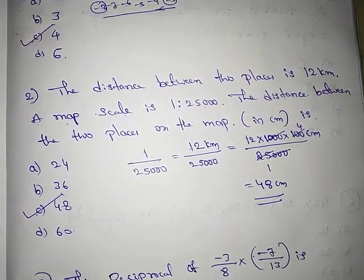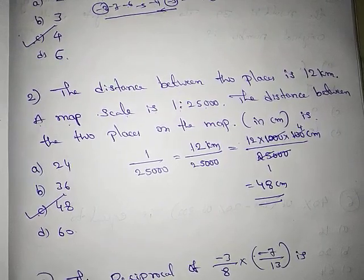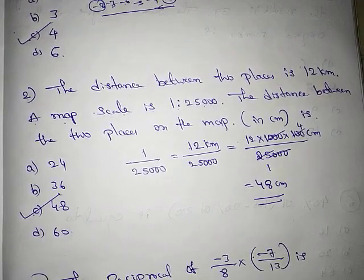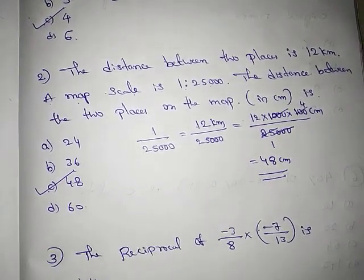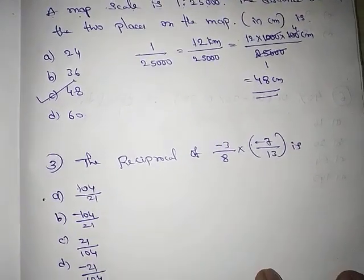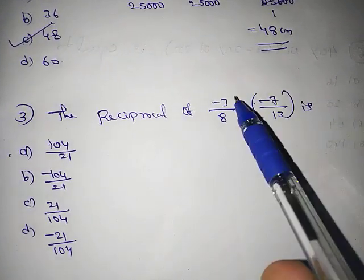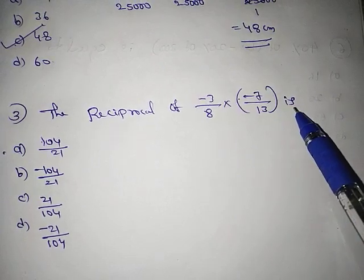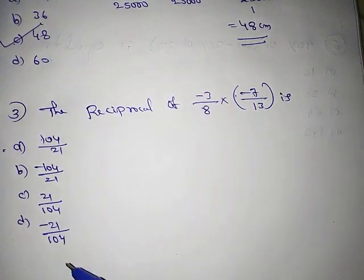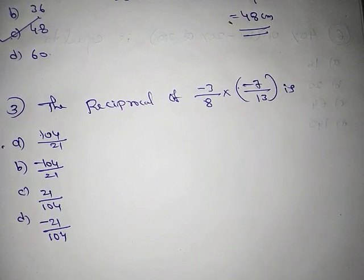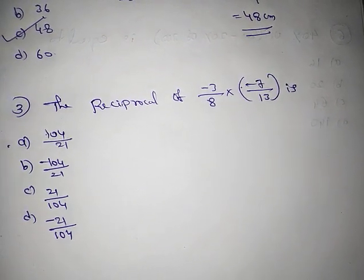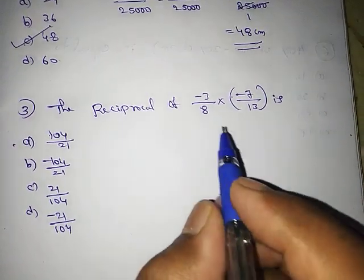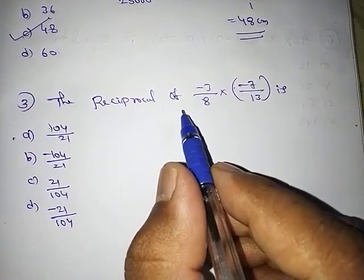I hope you understand this. If not, you can review the video and take a screenshot to practice. Next: the reciprocal of (-3/8) × (-7/13) is. You don't need to check the options first — just solve the problem. Reciprocal means multiplicative inverse: numerator becomes denominator, denominator becomes numerator.